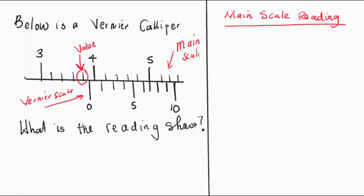How do you know the value? The first thing you need to know is the value of each small line that is placed in between the bigger line. How do you do that? You get two close numbers like this. You subtract them.